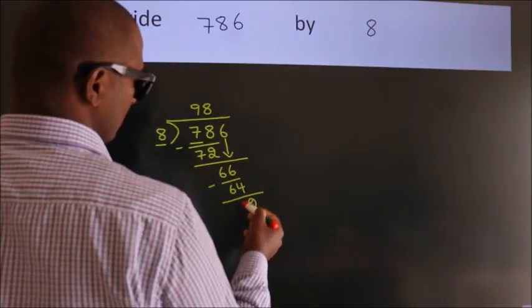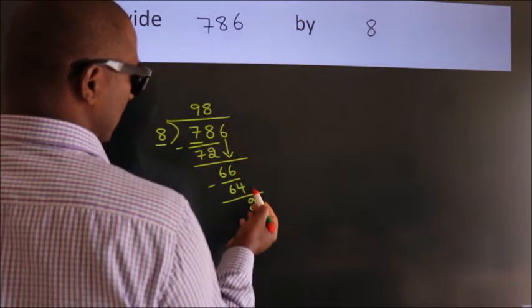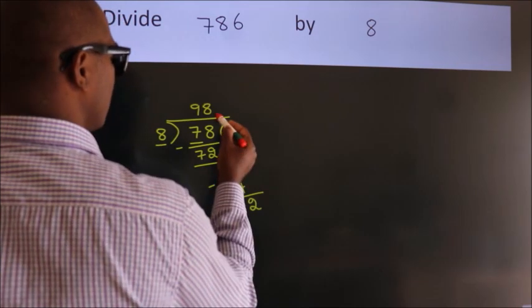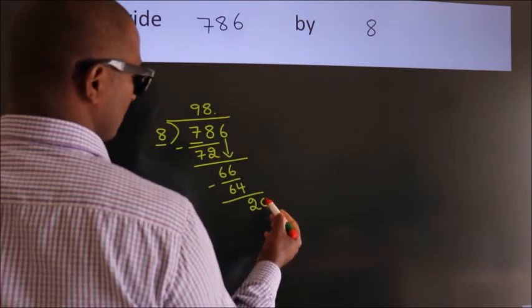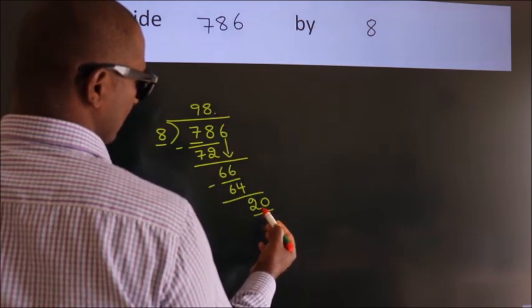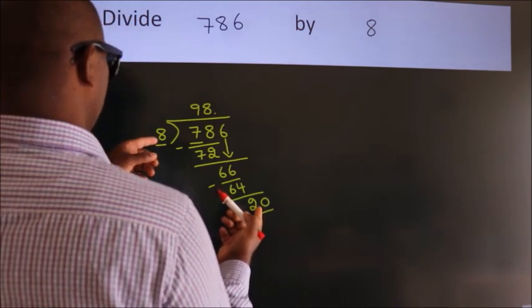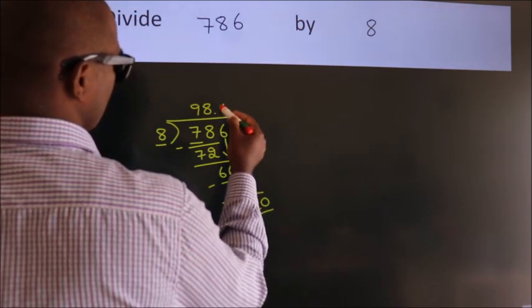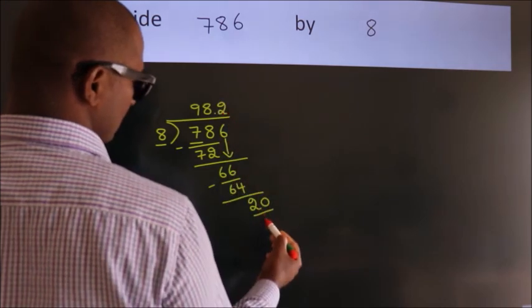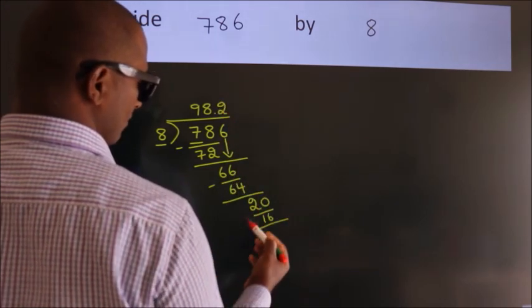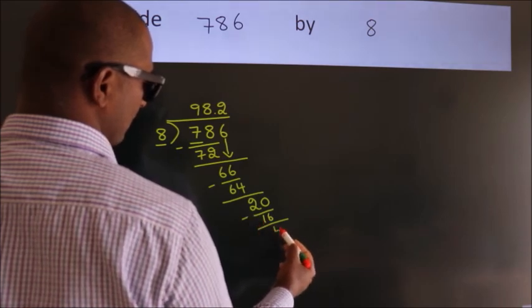After this, no more numbers to bring down. Now what we do is we put a dot and take 0, so 20. A number close to 20 in the 8 table is 8 twos, 16. Now we subtract. We get 4.